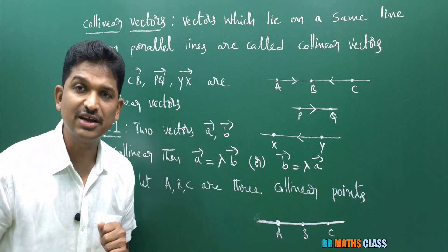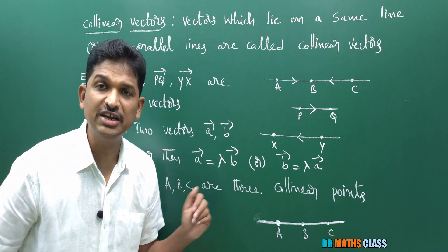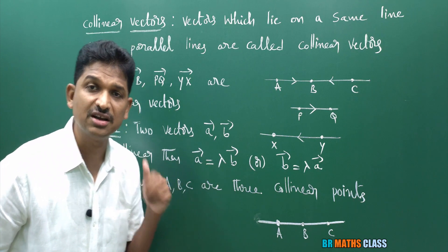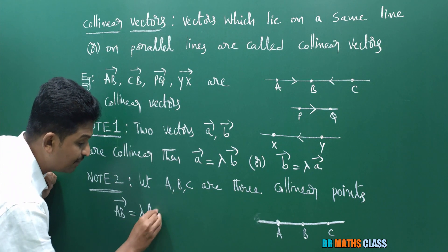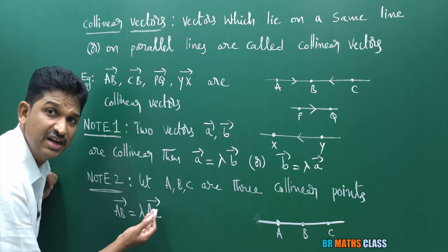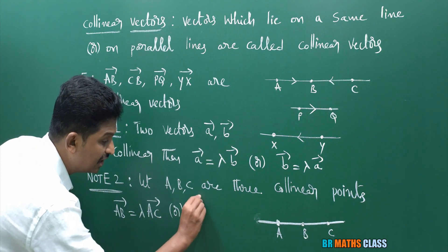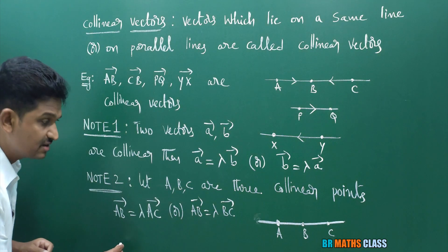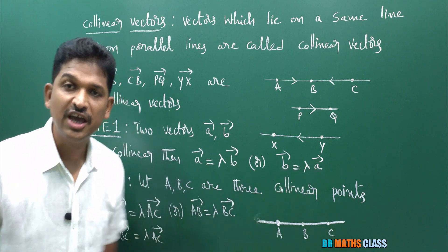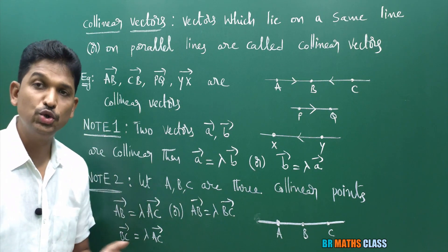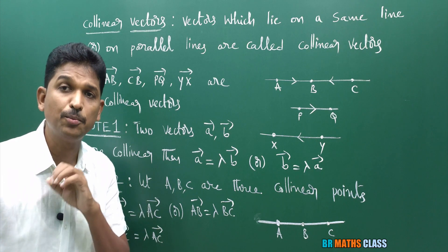From note one, if two vectors are collinear vectors, then one vector can be expressed as scalar multiplication of another vector. Here AB bar, BC bar, AC bar are collinear vectors. So what I am trying to say: if three points A, B, C are collinear, then AB bar is lambda times of AC bar, or AB bar is lambda times of BC bar — one vector is a scalar multiplication of another vector. To prove three points are collinear, if you prove any one of these, it is enough. While doing problems, if they ask to prove three points are collinear, if you prove AB bar equals lambda times of AC bar, it means the points are collinear.